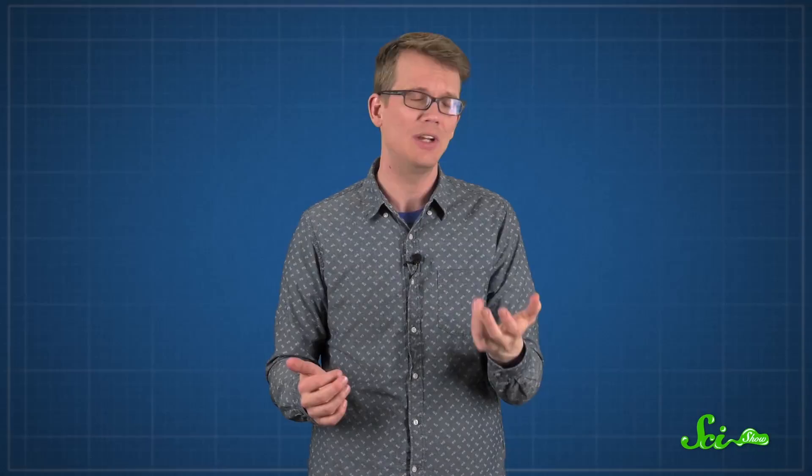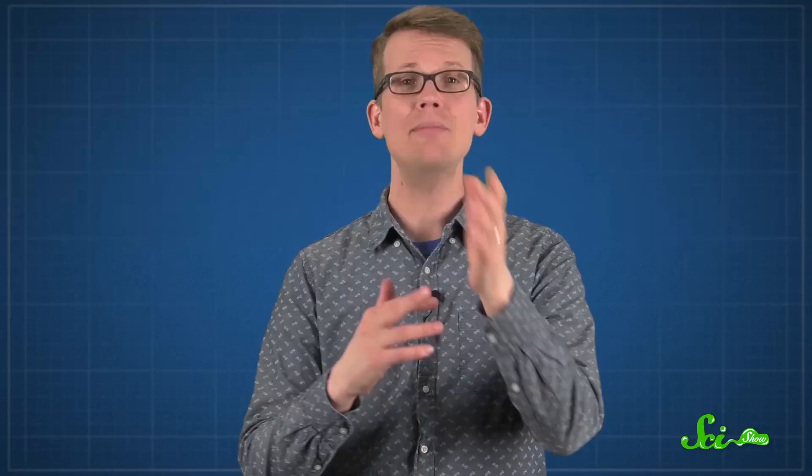Dimples are also somewhat confusing when it comes to how they might be inherited. They're often touted as an example of a dominant genetic trait, where a child has a 50-100% chance of having dimples if one of their parents does. Sometimes dimples are even used in classrooms when teaching about genetics.